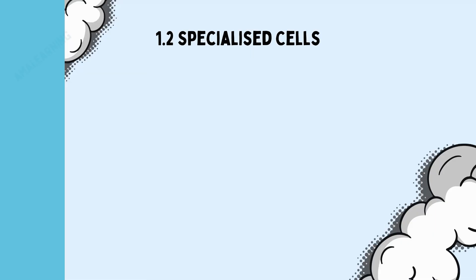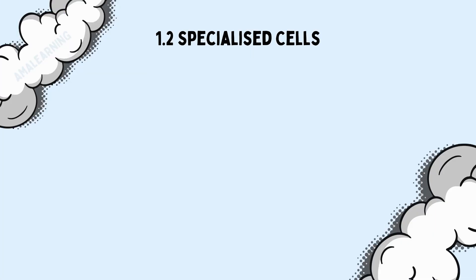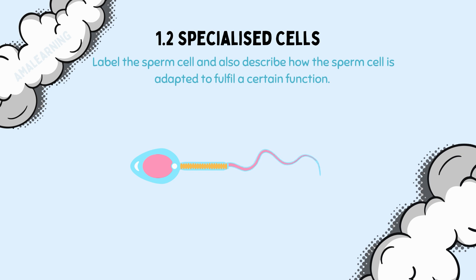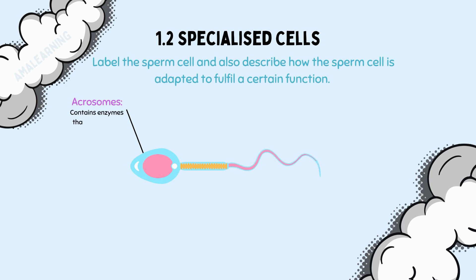Exam questions linked to the sperm cell will either ask you to label the sperm cell, or ask you to describe how the sperm cell is adapted to fulfil a certain function. The sperm cell has enzymes called acrosomes in the head part of the cell. When the sperm cell reaches the egg cell and needs to enter, it has to break through the egg's jelly coat, and to do this it uses the acrosomes.